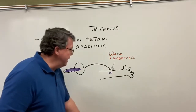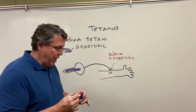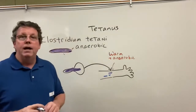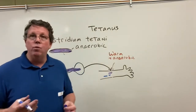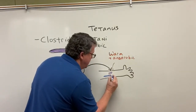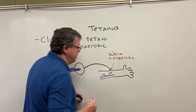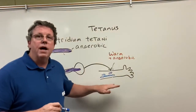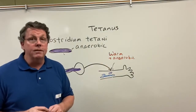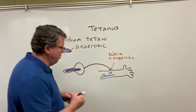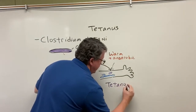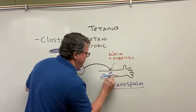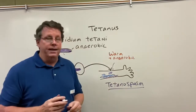Once Clostridium tetani gets inside the cut, it breaks out of its spores and starts to reproduce. It reproduces and then releases a toxin called tetanospasm. The bacteria does not move from this area, but the tetanospasm it releases is what causes the problem.